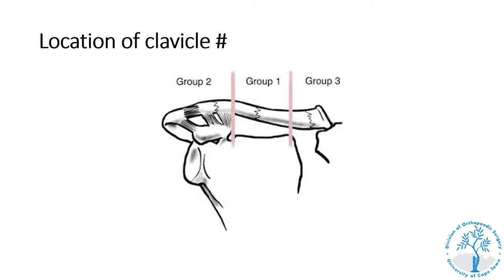It is useful for general practitioners to know the Ullmann classification of clavicle fractures, divided into three groups. Group one is by far the most common — mid-shaft clavicle fractures. The vast majority can be treated non-operatively, even displaced ones. Only highly displaced ones with more than 100% translation and shortening more than two centimeters need to be reviewed semi-urgently by an orthopedic surgeon.